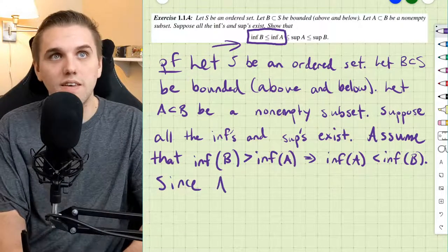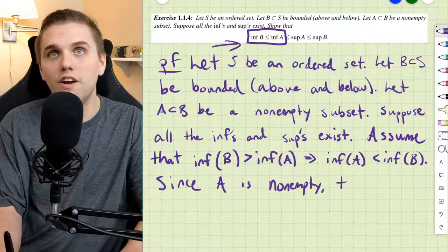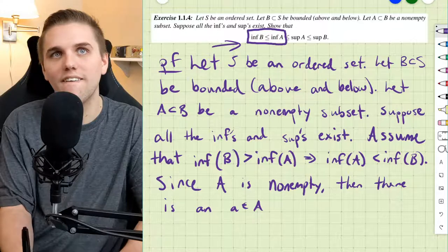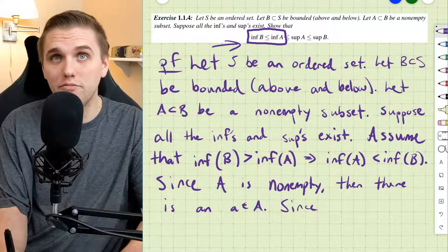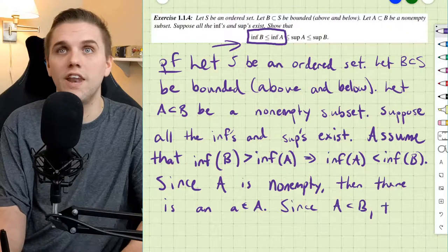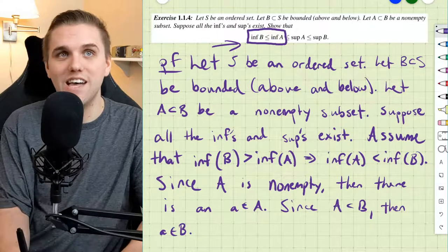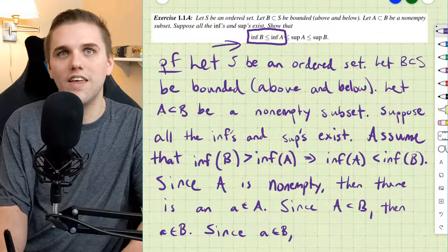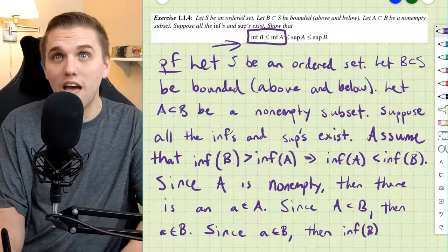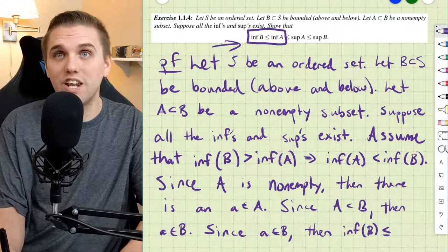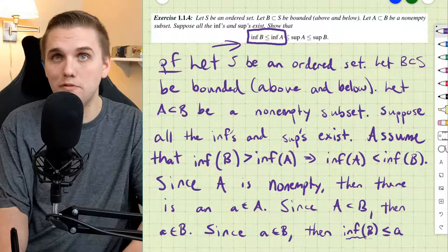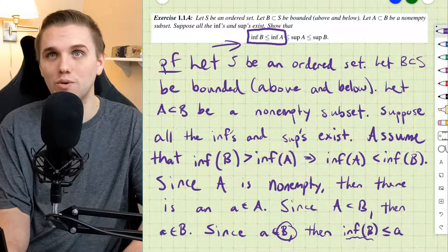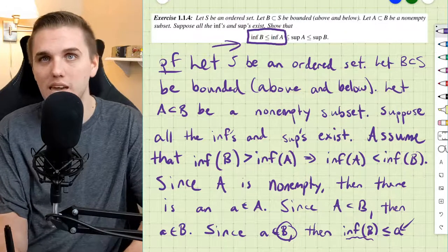Since A is non-empty, then there is an A that's inside my set A. Well, since A is a subset of B, then A is in B. And since A is in B, then the infimum of B has to be less than or equal to A, since the infimum of B is a lower bound to B, meaning that it's less than or equal to every element in B.